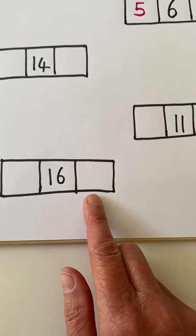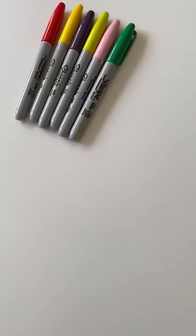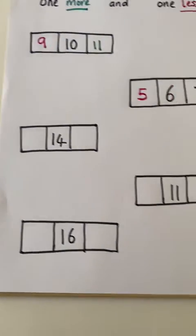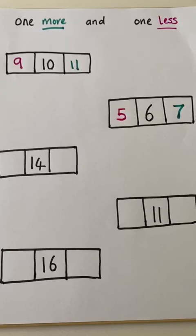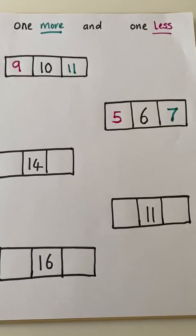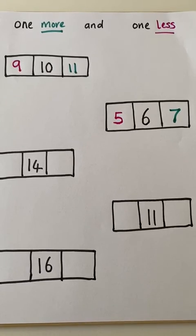You can use a number line to help you if you need to, children. You can use objects like Mrs. Clifford - I use the pens. You can just use your fingers or your knowledge of counting. Whatever you need to do to help you work out the number that is one more than a number and one less.